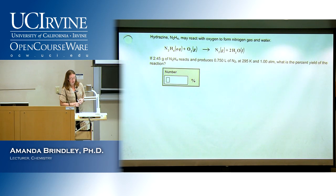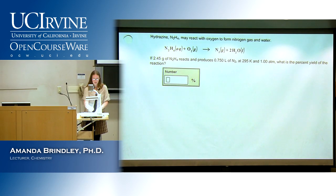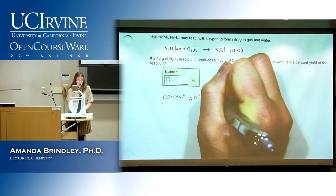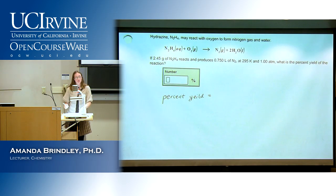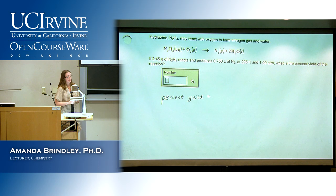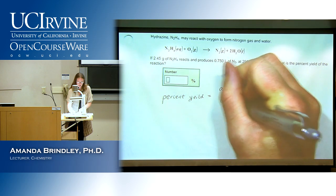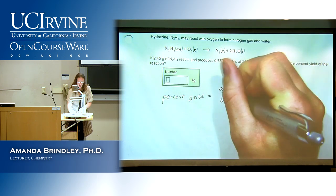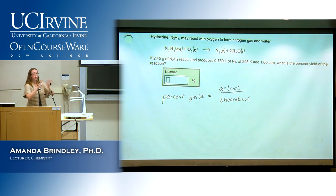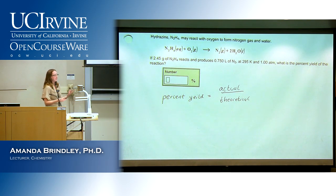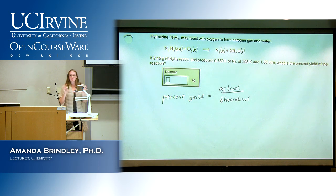What is percent yield? The formula has an actual and a theoretical — actual over theoretical. The actual minus theoretical over theoretical is something else: that's percent error. We don't tend to do a lot of that in this class, but it's a good thing to remember for lab.